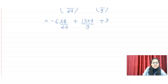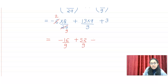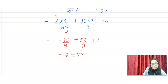Now you can see — if I simplify here, 6 multiplied by (−8/27) gives minus 16 upon 9 after cancelling. Then 13 multiplied by 4 by 9 gives 52 by 9. Plus 3. Now combining over the same denominator of 9: minus 16 plus 52, and plus 3 times 9, which is 27 — all over 9.